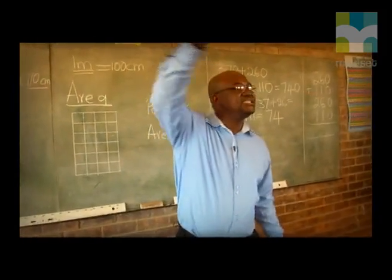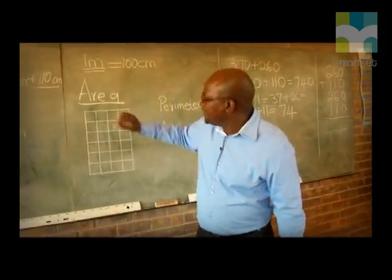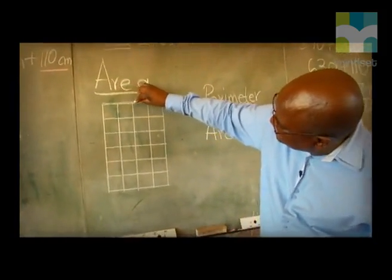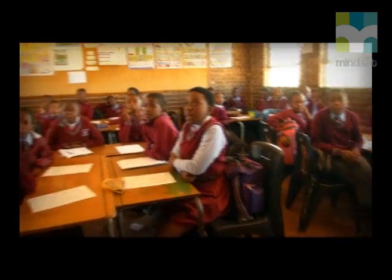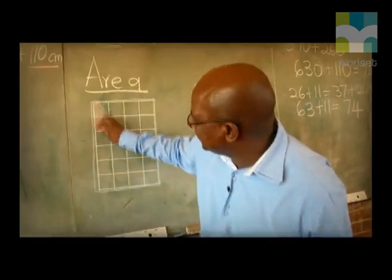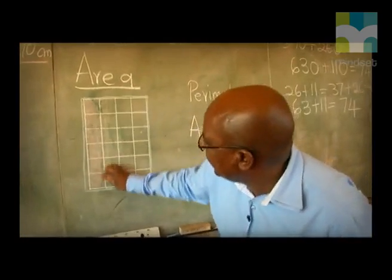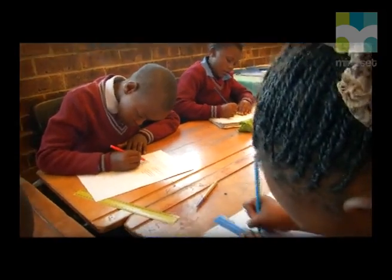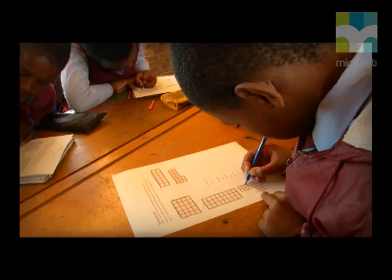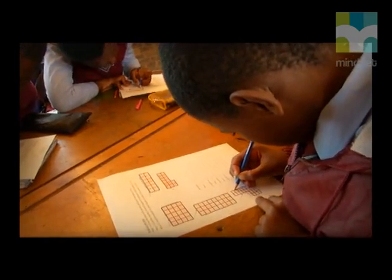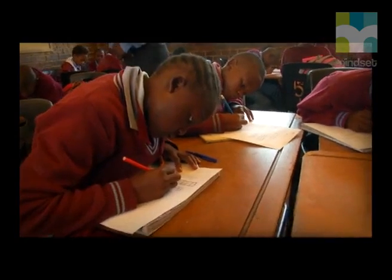Remember we said perimeter is the distance around the shape. So the purpose of colouring was to say to them: think about these two concepts — area and perimeter. On that shape, which do you think is perimeter and which do you think is area? It was simpler because all of them understood that we are to colour perimeter in blue, and for area they coloured those small squares inside the shape.